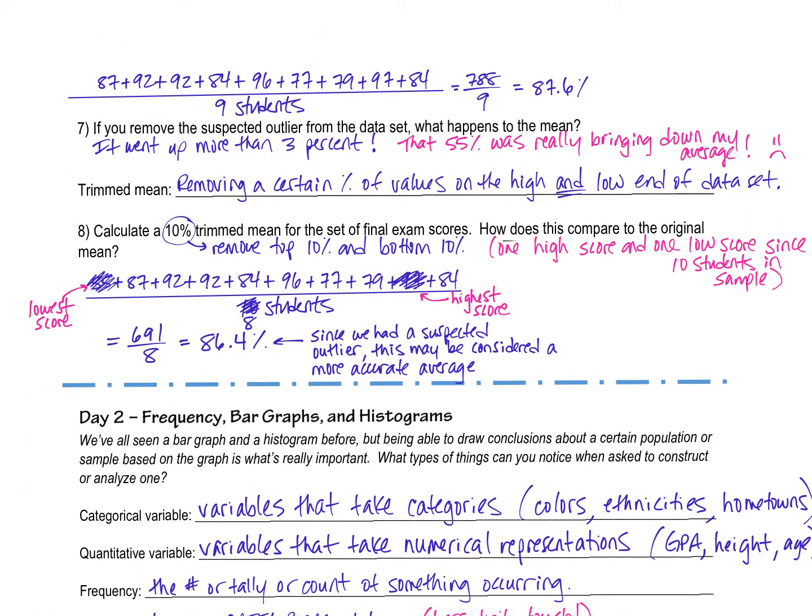That's up more than 3%. That 55 really brought down my average. That, again, is the idea of resistance. The mean does not resist the outliers. This proves it. If you remove the outlier, look how much higher my average was.